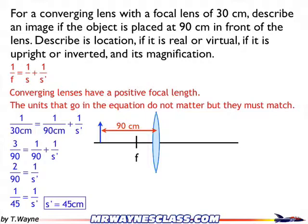So when light goes through the lens in my diagram, it's going to start on the left side, go through the lens, and end up on the right-hand side. A positive s prime means the image is also going to be on the right-hand side. Because the image is going to be on the right-hand side where the light belongs — passing from left to right through the lens — that's going to be a real image. Whenever the image appears where the light belongs, that's always a real image. Also, the fact that s prime is positive tells me it's a real image as well.